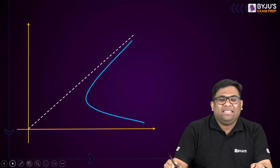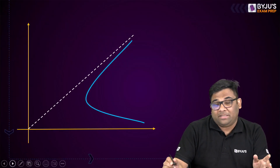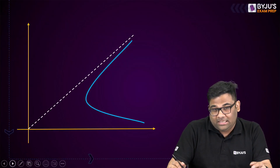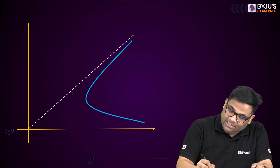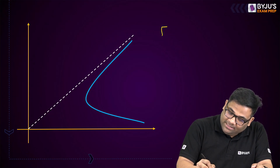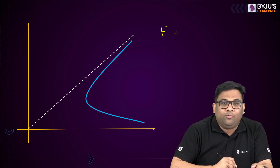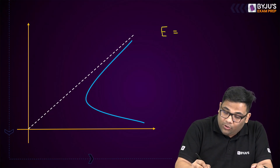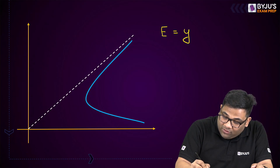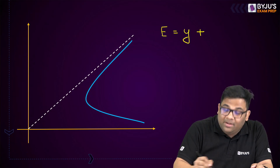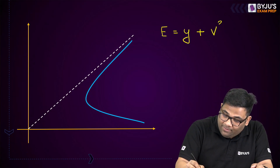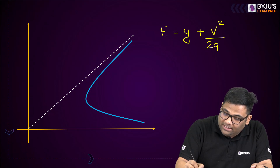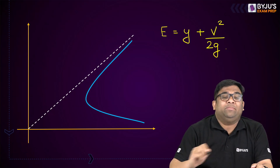First of all we will see something about specific energy. Specific energy is E equals depth of flow plus V squared by 2G. This is your specific energy.